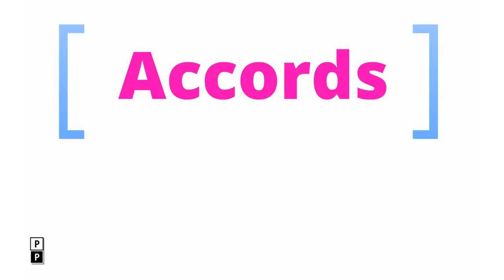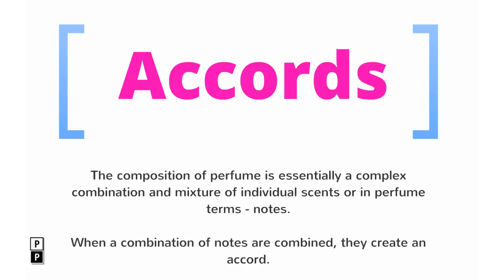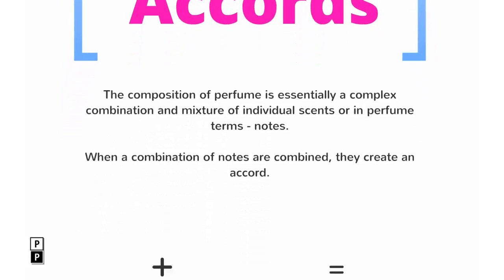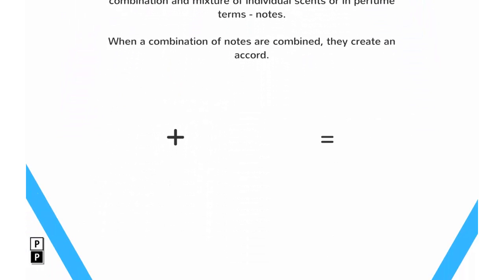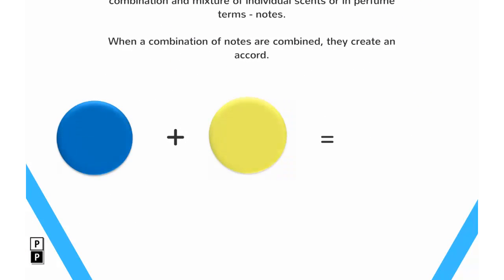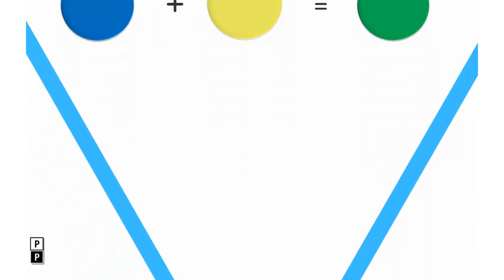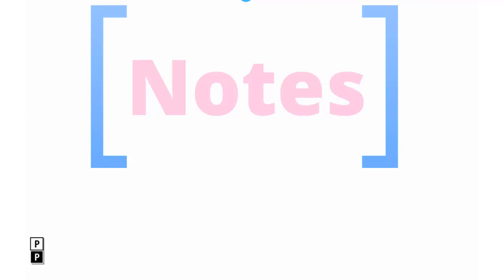Now that we know how and where the sources of scents are derived and organised, we can move on to the concept of accords. The composition of perfume is essentially a complex mixture of individual scents, or in perfume terms, notes. When a combination of notes is combined, they create a chord — the same concept applied to music when individual notes are combined to create chords. Alternatively, a simple metaphor is mixing the colour blue with yellow — when combined, you get a completely new colour altogether.